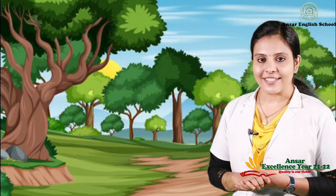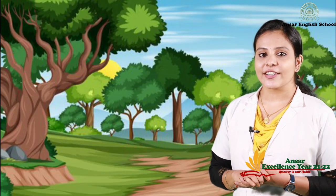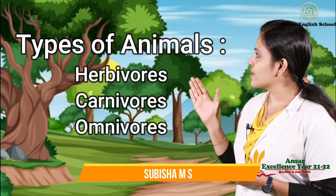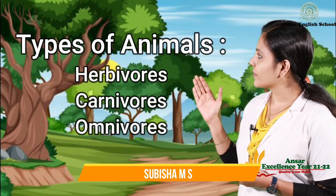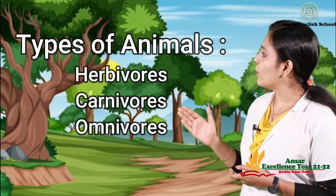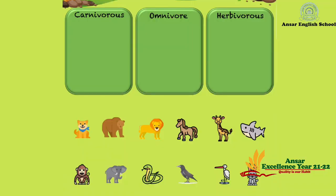Children, now let's revise once again: herbivores, carnivores, and omnivores. Activity: classify the animals according to their food habits.